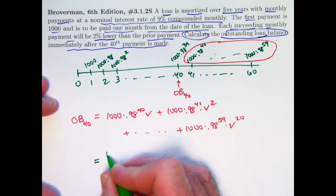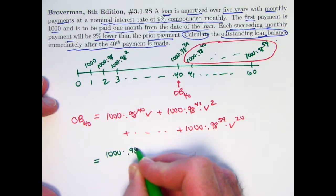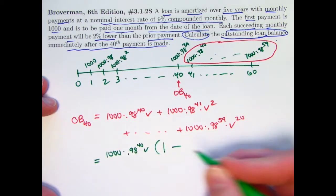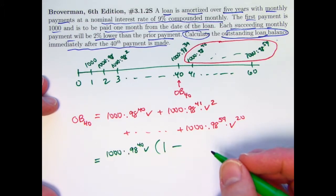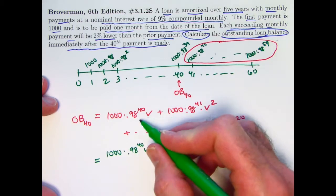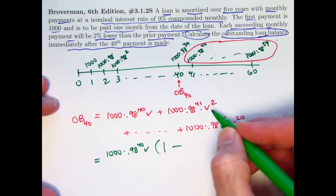It's the first term, which I can write as 1,000 times 0.98 to the 40th times V, times 1 minus the common ratio to the power equal to the number of terms. The common ratio is going to be what you need to multiply each term by to get the next term. I need to multiply by 0.98 and a V.